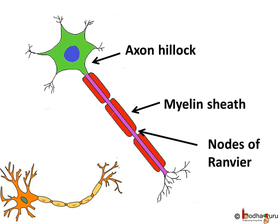Now, the axon is surrounded by a specialized insulator sheath called the myelin sheath. This sheath is interrupted at regular intervals, and these are called nodes of Ranvier. The myelin sheath consists of fatty materials, but many axons don't have this sheath.